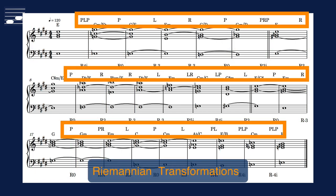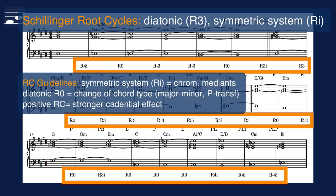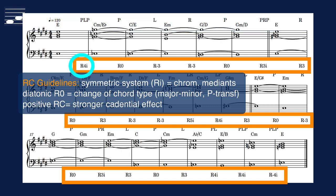Above the staff find the labels for the basic, compound and third-order transformations. Below the staff read the Schillinger positive and negative root cycle labels, with R0 and R3 corresponding to diatonic root movement, while the others are referring to the symmetric root system. For example, the first label R4i indicates that the root is descending by four semitones from E to C.